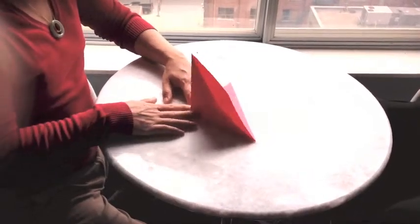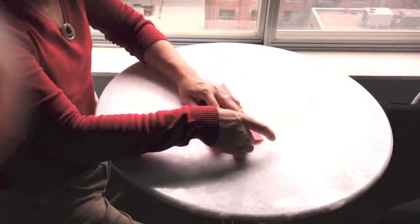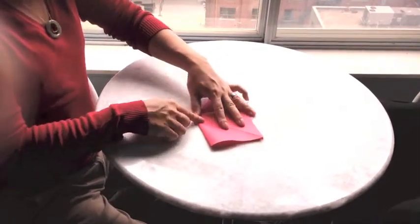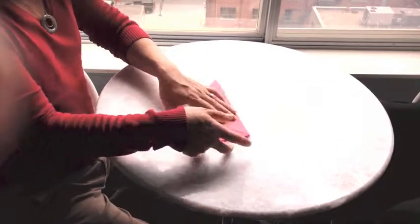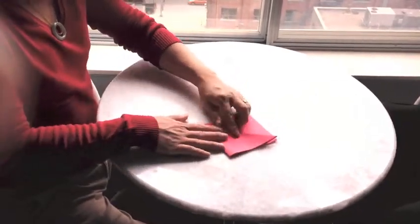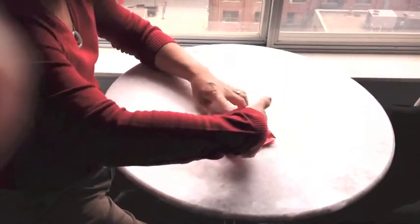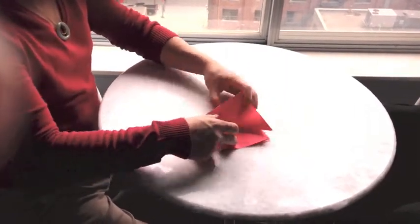Now you fold it like so and join the tip to the bottom. Smooth this out, do the same thing for the other side. Fold this up and join the tip.